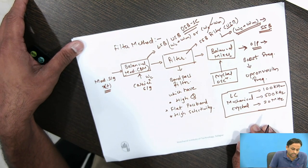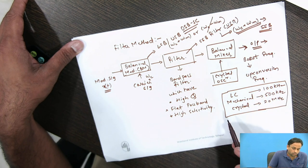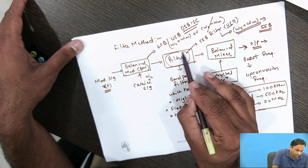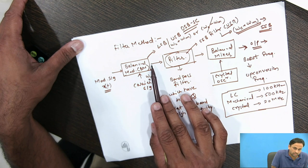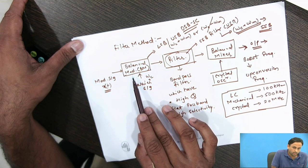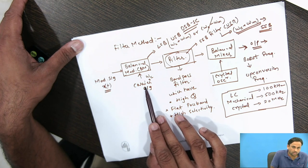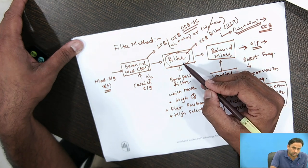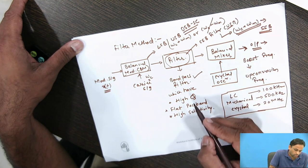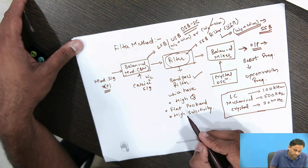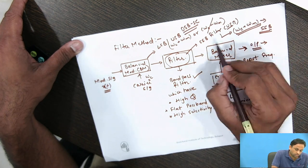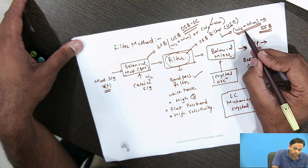SSB is used in navigation systems and satellite communications. To revise the filter method: we use a balanced modulator to suppress the carrier, producing a DSB-SC signal from the modulating and carrier inputs. This is then passed through a band pass filter with high Q, flat pass band, and high selectivity. After the filter, you get an SSB output — for example, the USB — since a high pass-like filter is applied.